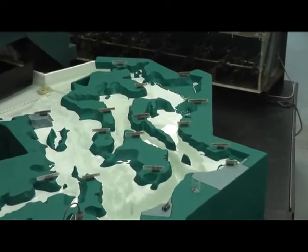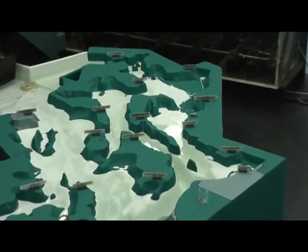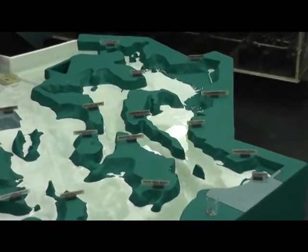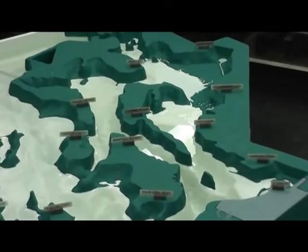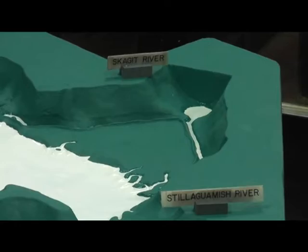The Whidbey Basin dramatically shows the estuarine circulation. Its three rivers supply two-thirds of all the fresh water that enters the Sound, including half of all the fresh water entering the Sound coming from the Skagit River alone.